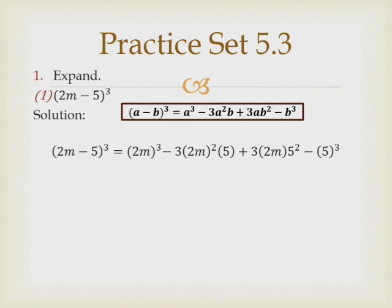So a cubed means (2m) cubed; minus 3a squared means minus 3 times (2m) squared times b, which is 5; plus 3ab squared means 3 into 2m into 5 squared; minus b cubed means minus 5 raised to 3. Remember to put round brackets everywhere so that the multiplication is clear and the meaning is not changed.